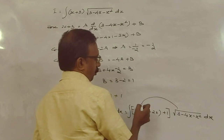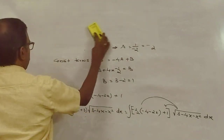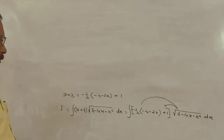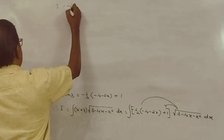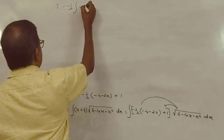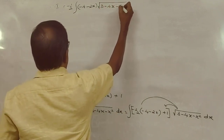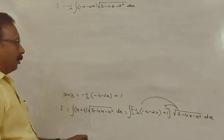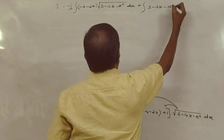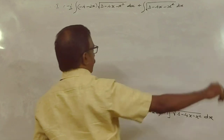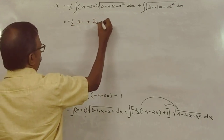Therefore x + 3 = (-1/2)(-4 - 2x) + 1. So I = integral of [(-1/2)(-4 - 2x) + 1] into root of (3 - 4x - x²) dx = -1/2 integral of (-4 - 2x) root(3 - 4x - x²) dx + integral of root(3 - 4x - x²) dx. This gives I = -1/2 · I1 + I2.